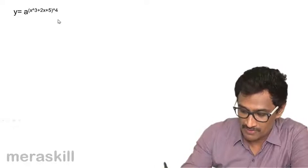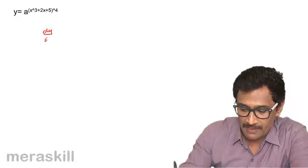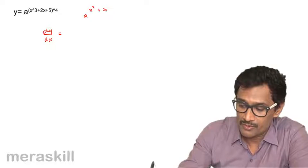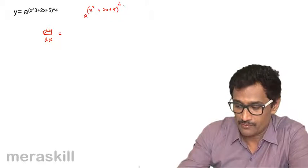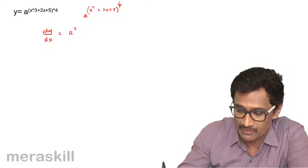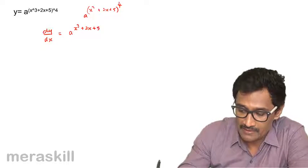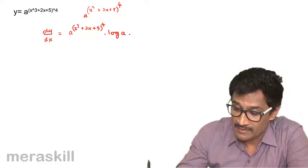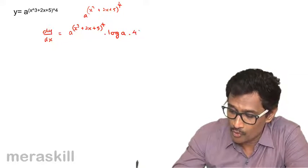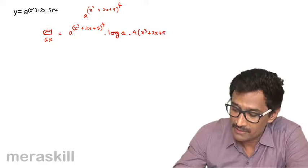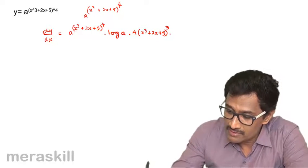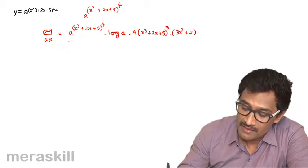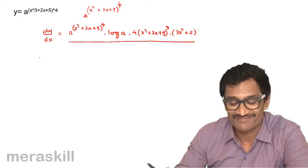Similarly, for y = a^((x³+2x+5)⁴), dy/dx = a^((x³+2x+5)⁴) × log_e(a) × derivative of (x³+2x+5)⁴, which is 4(x³+2x+5)³ × (3x² + 2). So this is the derivative of this whole expression, and we are using the chain rule effectively.